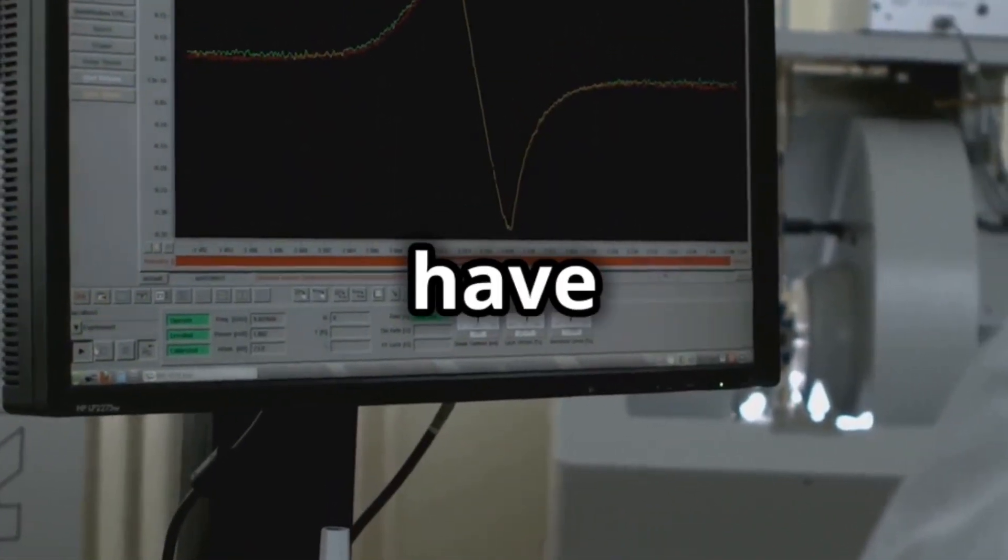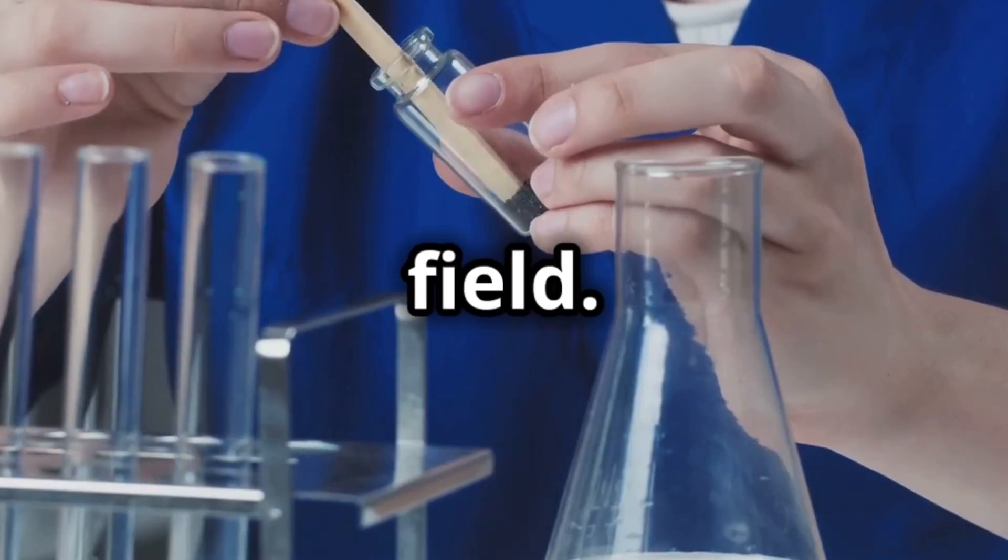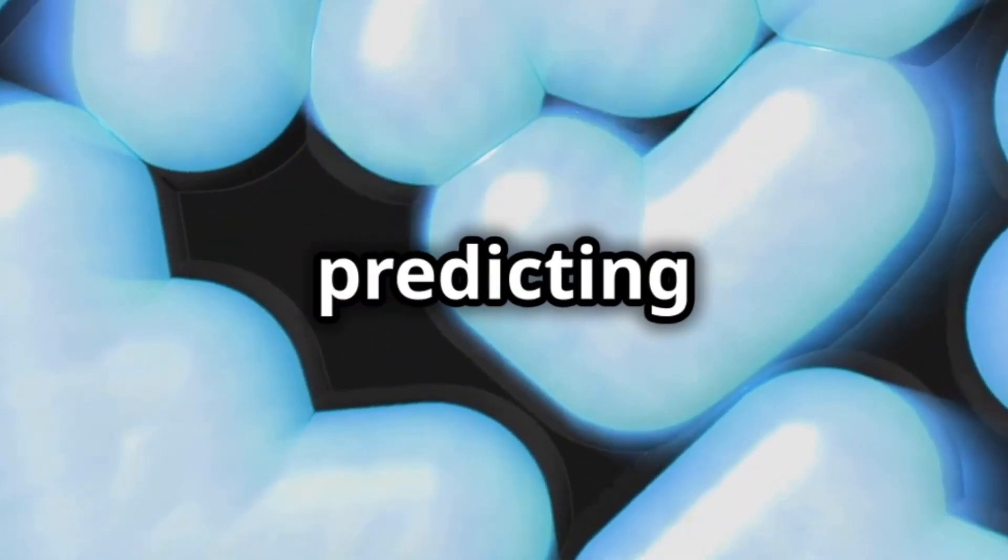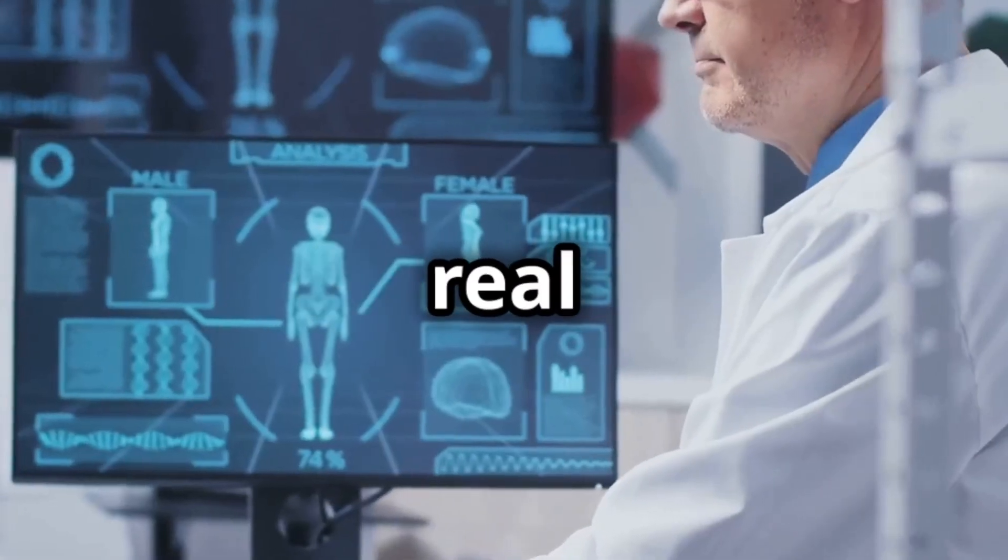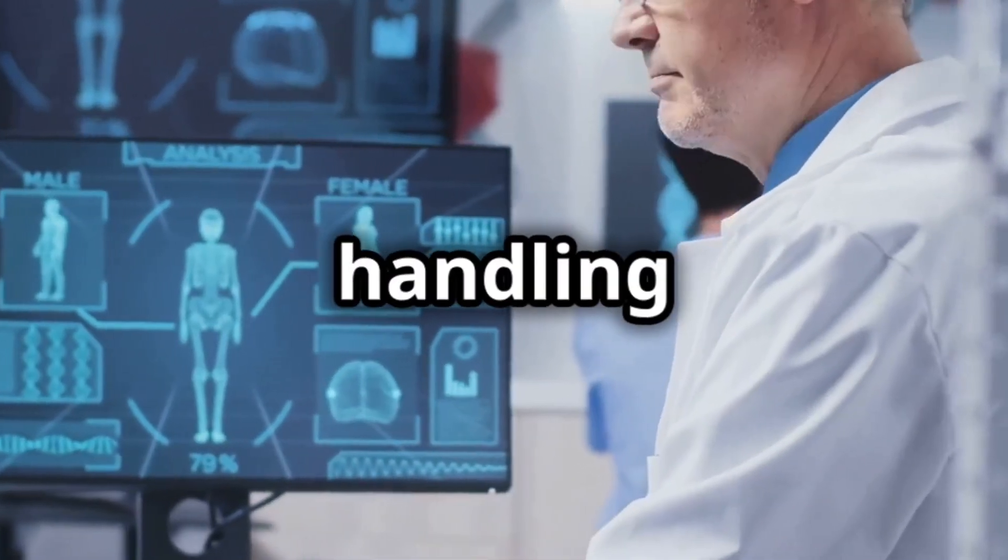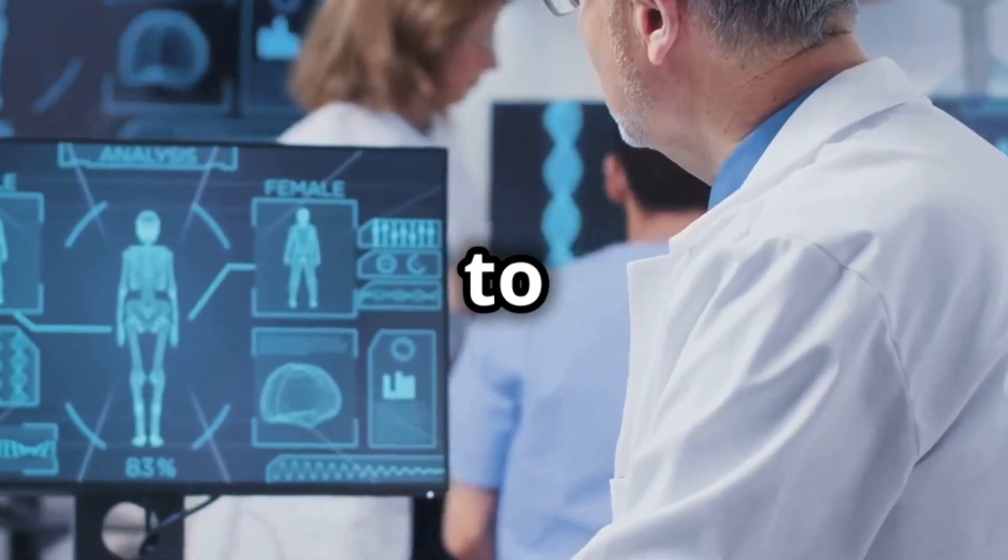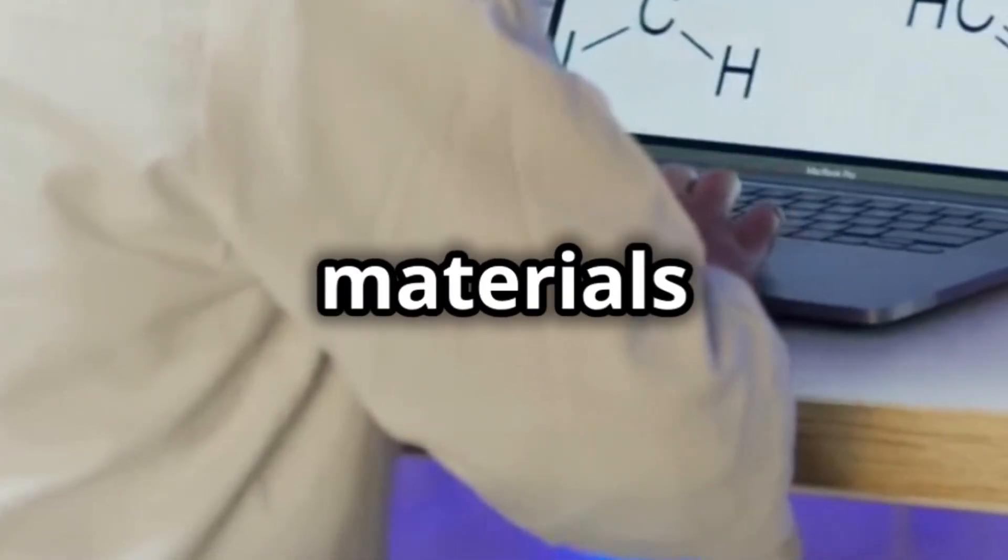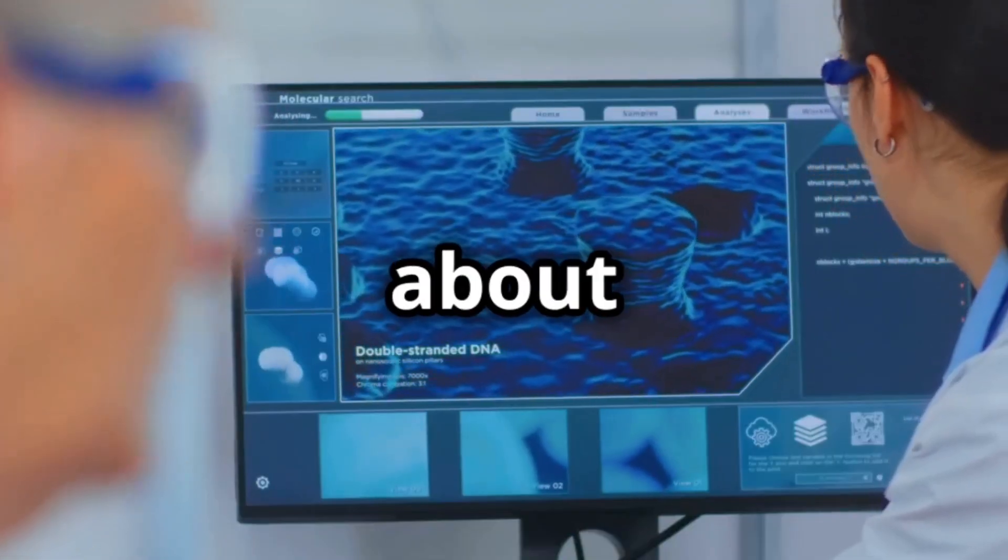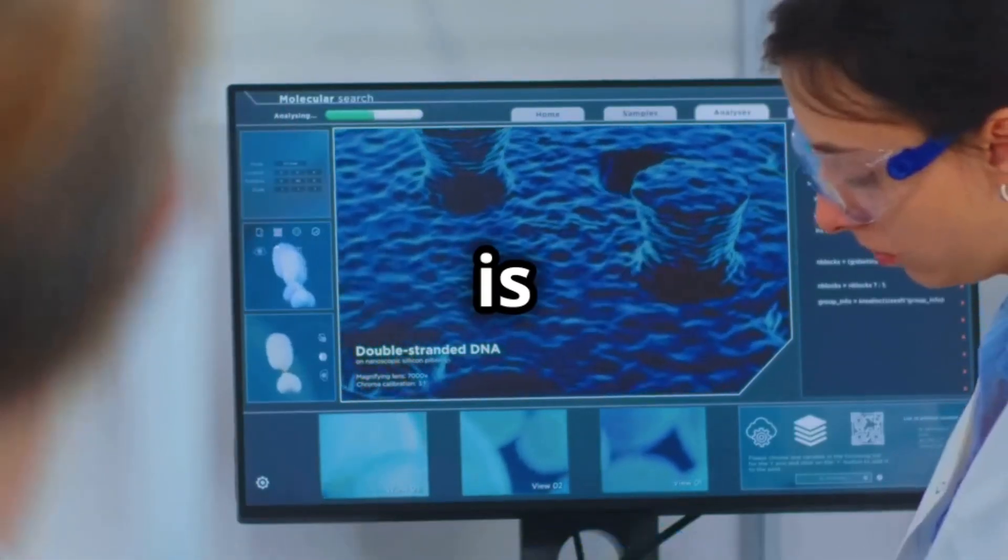First up we have Gaussian, a true veteran in the field. It's all about electronic structure calculations, predicting molecular energies, structures, and vibrations. Gaussian's real strength is its versatility, handling everything from small molecules to massive systems. It's a favorite among chemists working on drug design to material science. If you're serious about computational chemistry, Gaussian is a must-have tool.